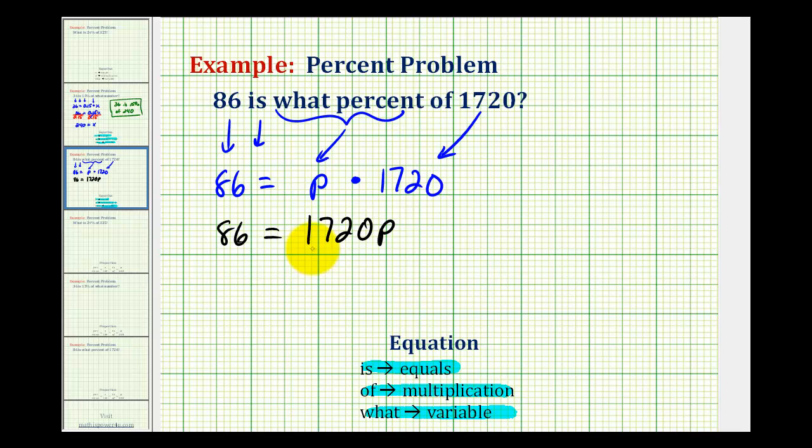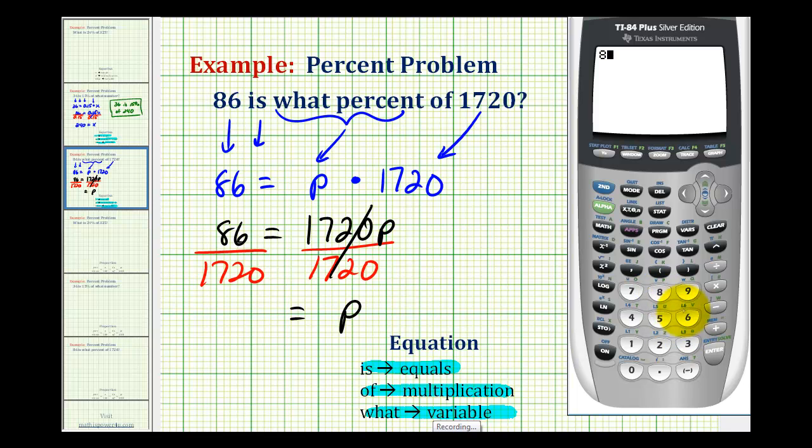So to solve this equation for p, we'll have to divide both sides by 1,720. So here we'll have p, and then we'll determine this quotient. So we have 86 divided by 1,720, and so p is equal to 0.05.